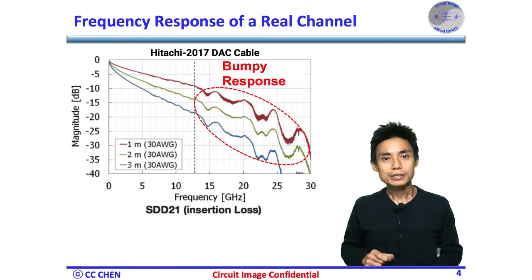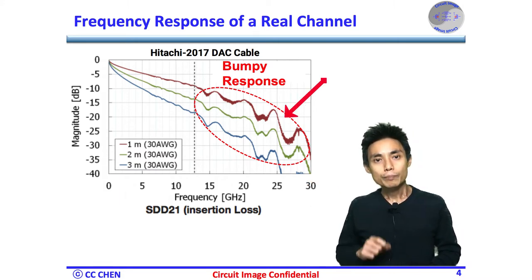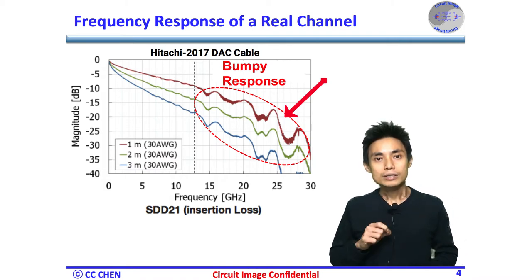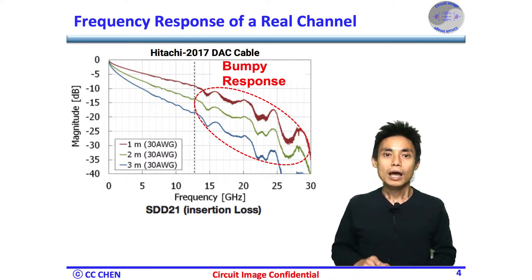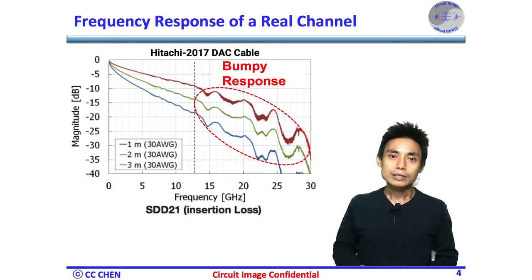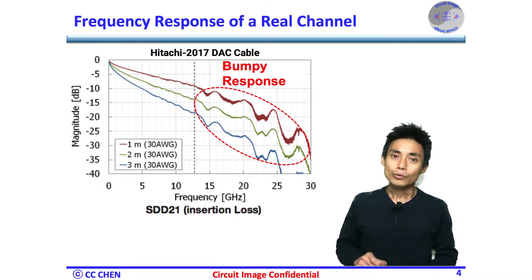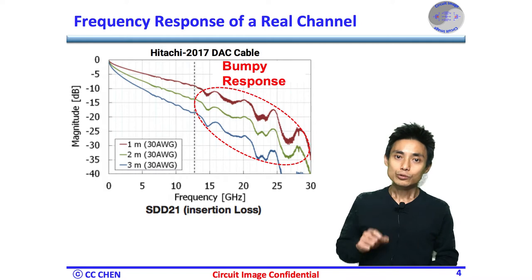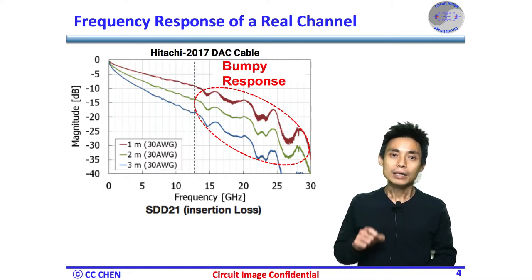As shown in the CTLE videos, the neural channel response shows not only a low-pass response but also a bumpy response. The CTLE's high-pass frequency response can be the inverse of the channel's simple low-pass response, but it cannot easily equalize the bumpy response. That bumpy response would require a few poles and zeros to invert. Therefore, the discrete-time equalizer or FIR has more flexibility to generate the inverse of the bumpy response by applying more taps and different weights.